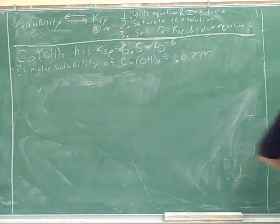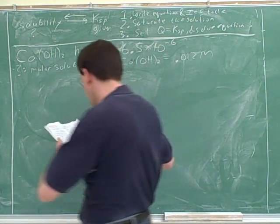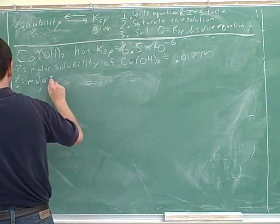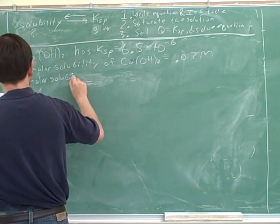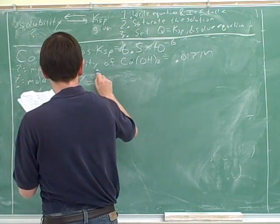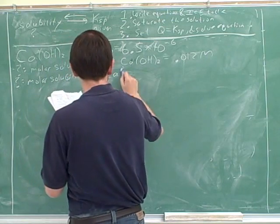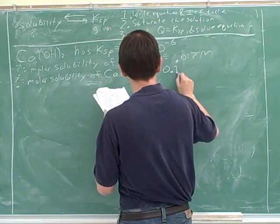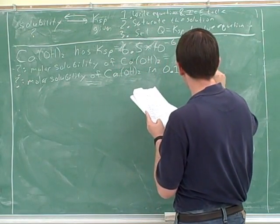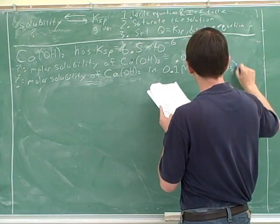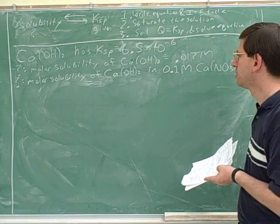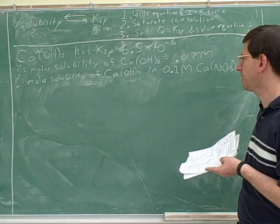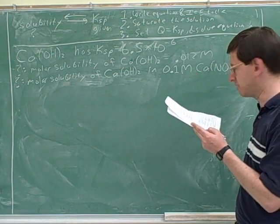Now I have a new problem. I want to find the molar solubility of calcium hydroxide in 0.1 molar calcium nitrate. The new problem is to find the molar solubility of calcium hydroxide in 0.1 molar calcium nitrate.